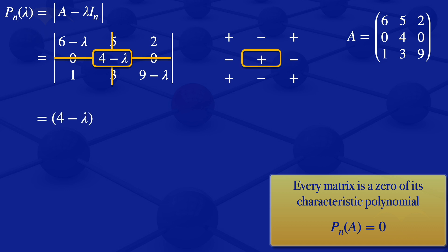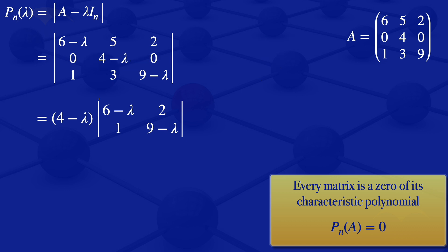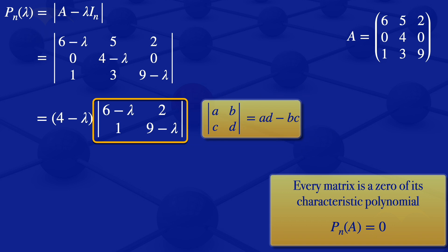So we would have 4 minus lambda multiplied by the determinant of the uncovered elements: 6 minus lambda, 2, 1, 9 minus lambda. This is a 2 by 2 determinant. The determinant of a 2 by 2 matrix A, B, C, D equals AD minus BC. So that part simplifies to (6 minus lambda)(9 minus lambda) minus 2. Our characteristic polynomial becomes (4 minus lambda) times [(6 minus lambda)(9 minus lambda) minus 2].